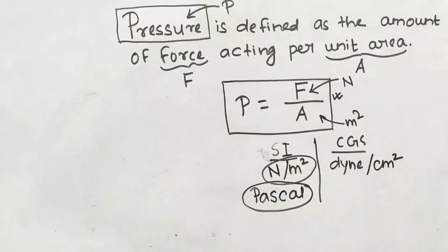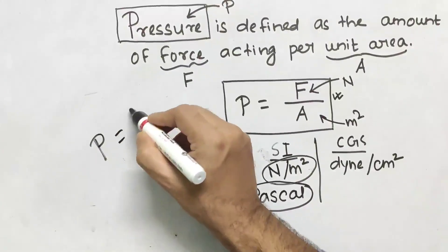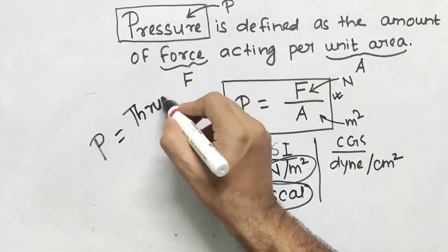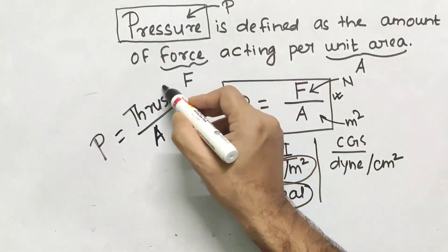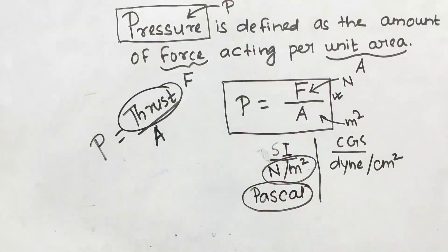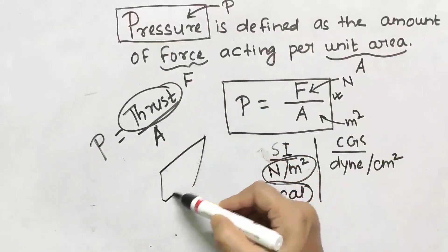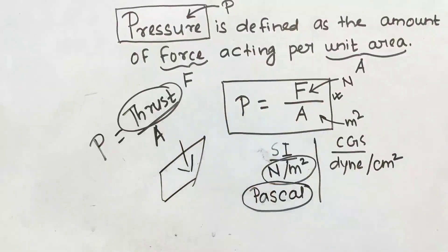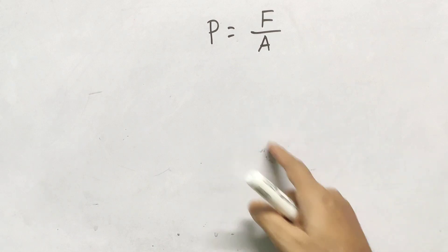This expression can also be written as P equals thrust per area. Thrust is nothing but the total amount of force acting on a surface — the total amount of force is known as thrust.